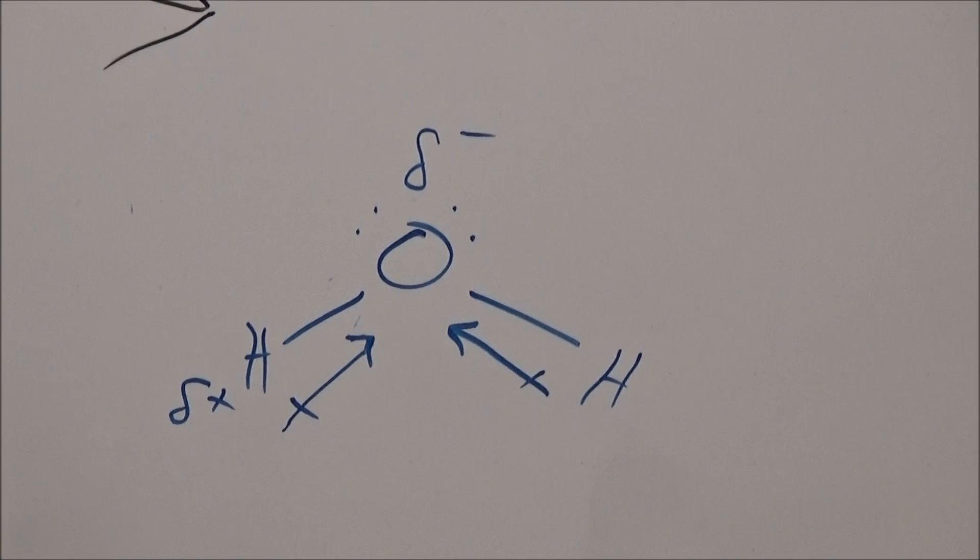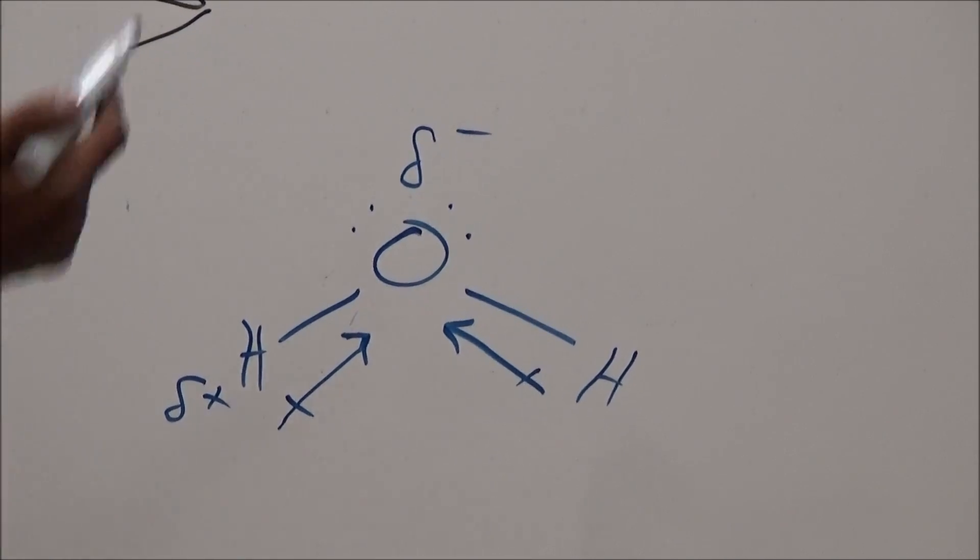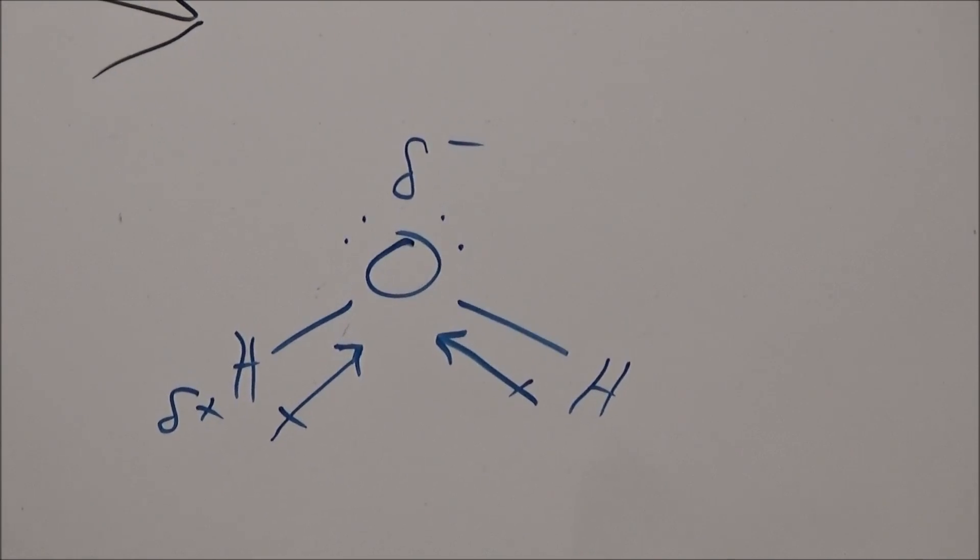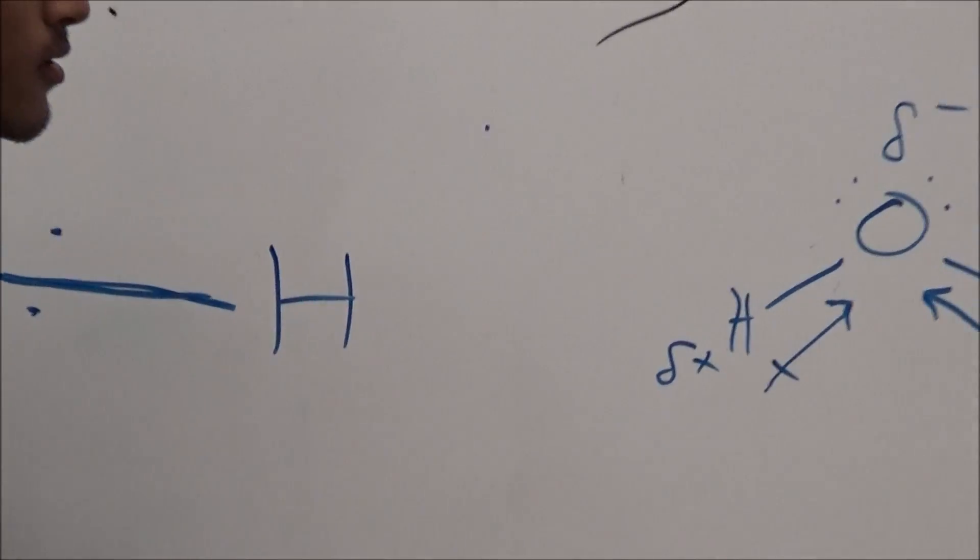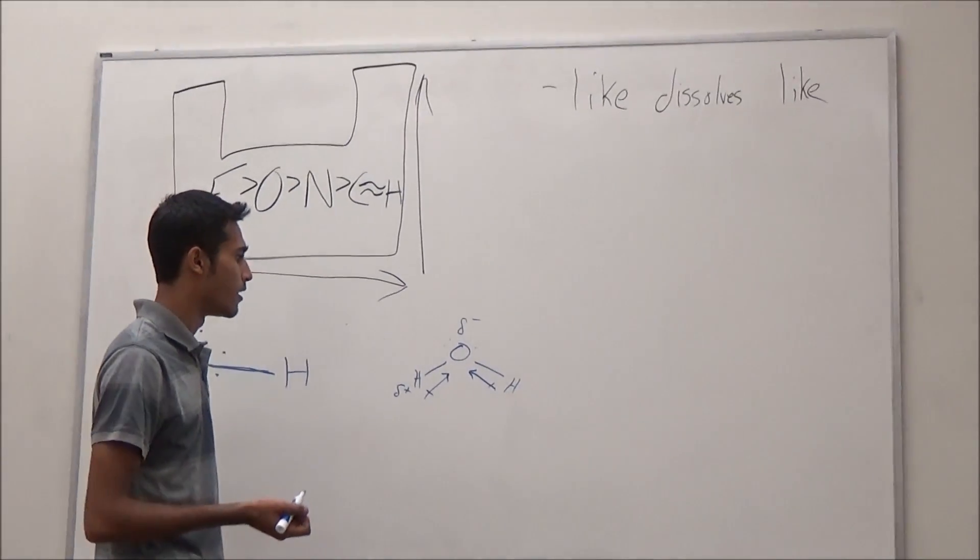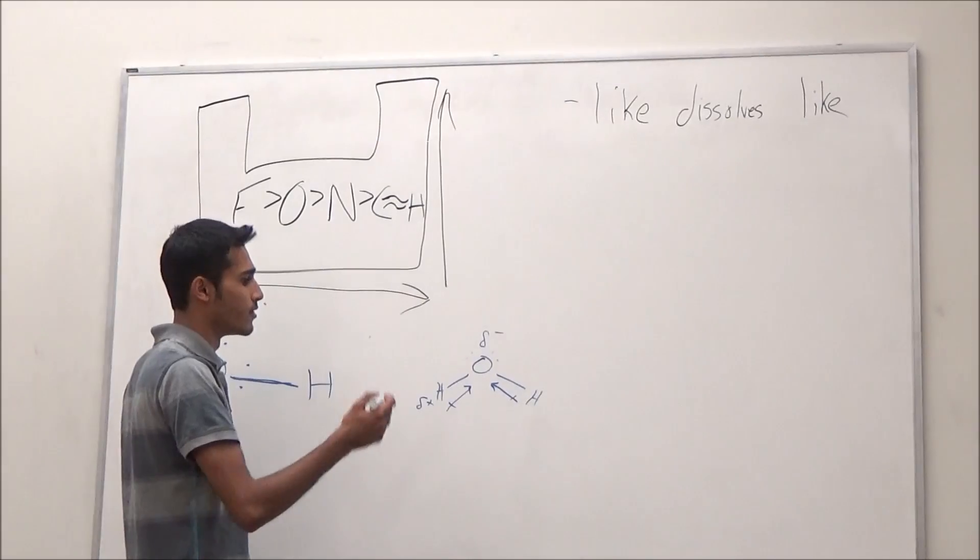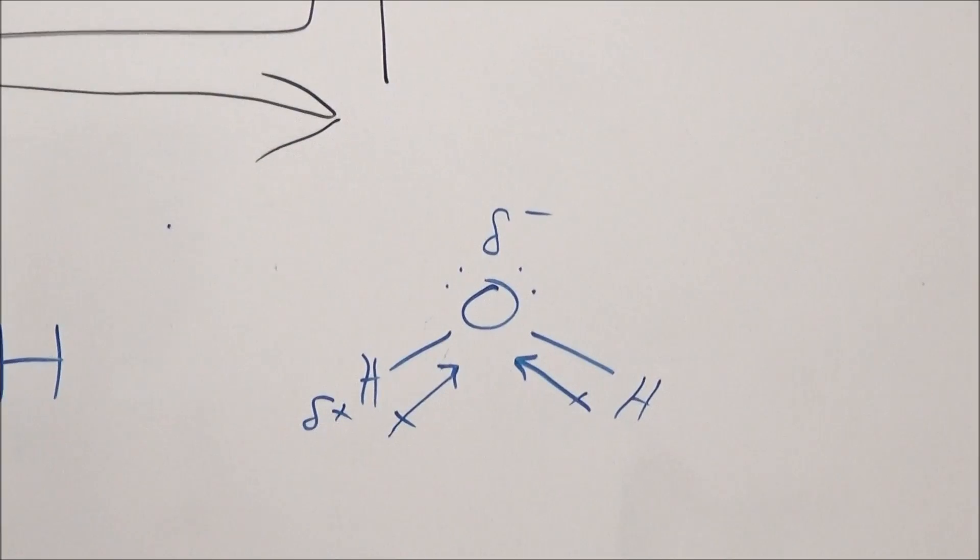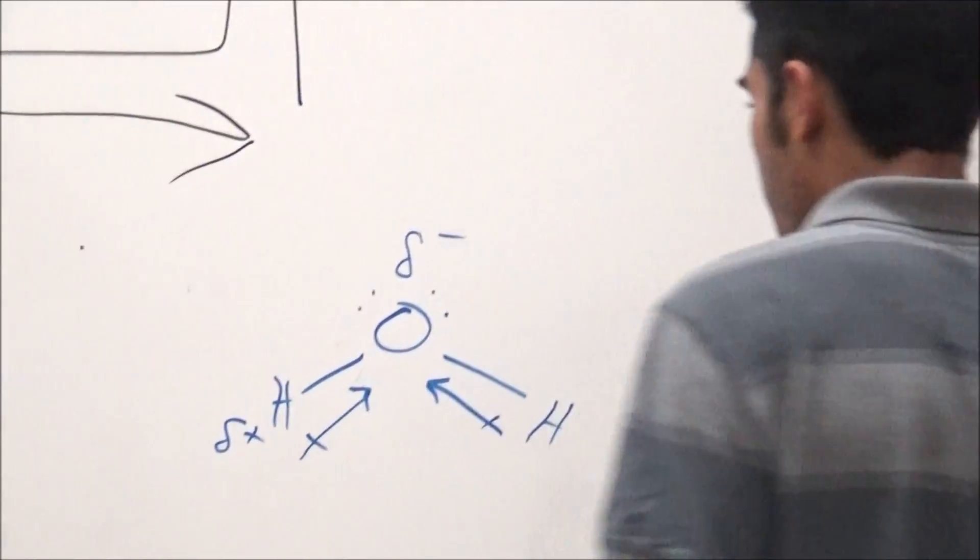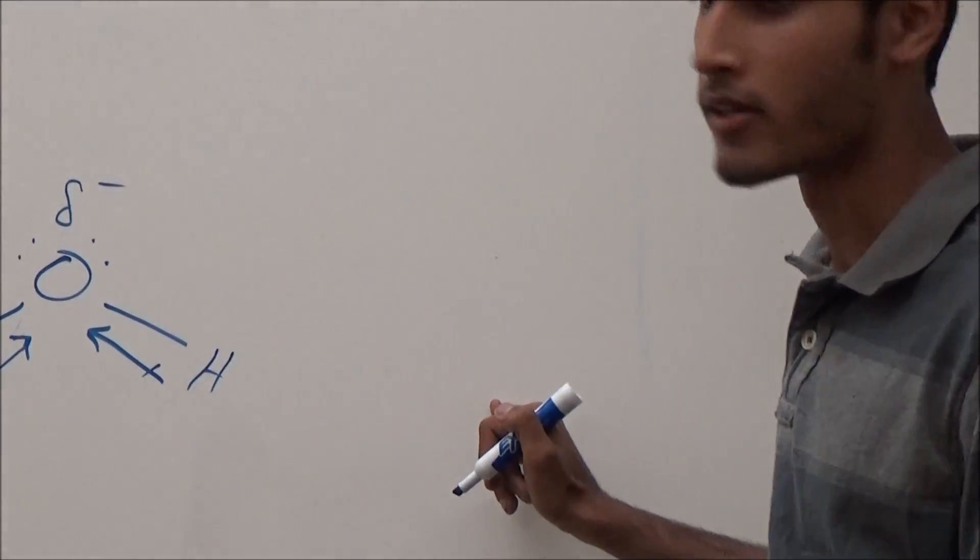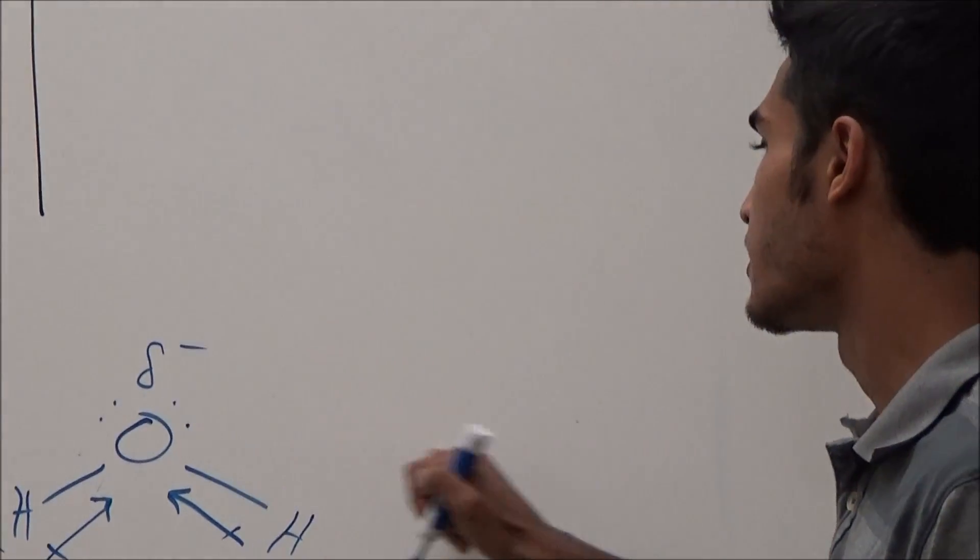Now, this gives rise to the polarity and, as I was saying, that like dissolves like. So if you were to have another molecule that has partial positives or partial negatives, like this water molecule, then that will be able to interact with and therefore dissolve into water. Now, if you had something that didn't have the partial positives or partial negatives, it cannot interact with water and therefore it will not dissolve in water.